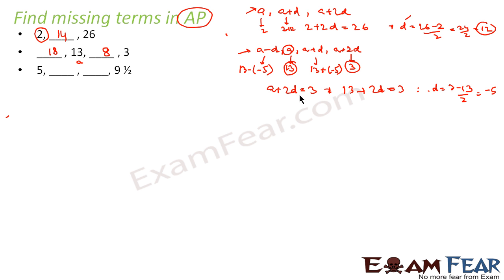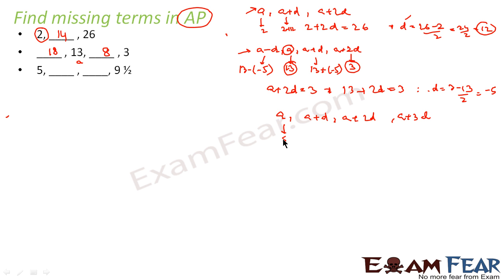Let's take one more example: 5, _, _, 9 and a half. So let the terms be A, A plus D, A plus 2D, and A plus 3D. We are told A equals 5 and A plus 3D equals 9 and a half. Now 9 and a half is 19 by 2, so A plus 3D equals 19 by 2.